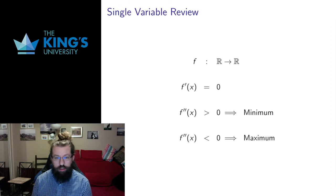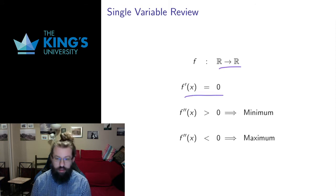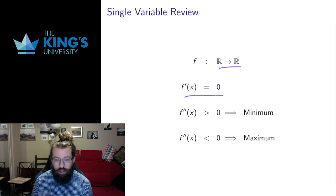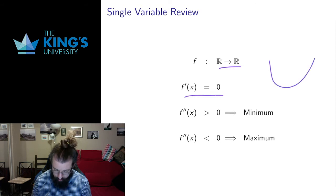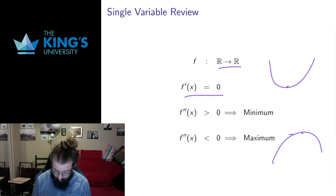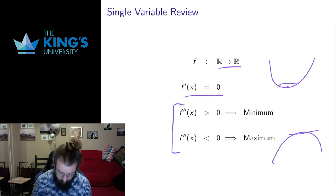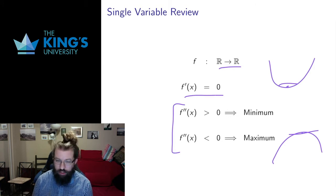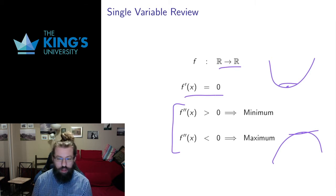Let me start by doing a review of what happens with single variable calculus. If I have a single variable function, I find the critical points by setting the derivative equal to zero, and one way I can understand them is by looking at the second derivative. If the second derivative is positive, I have a function which is concave up and I get a minimum. If the second derivative is negative, I have a function which is concave down and I get a maximum. In this way the second derivative can be used to classify the behavior of the critical point. If the second derivative is equal to zero, this test is inconclusive and we have to look for some other information, but this is a pretty good way to understand things.